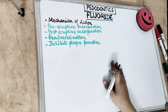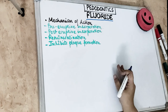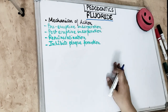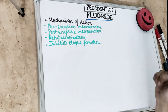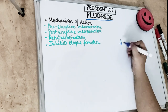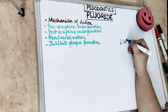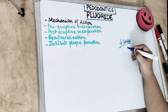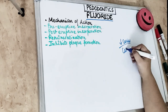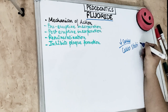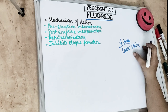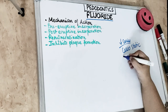Before we get started, make sure you subscribe to this channel and click on the bell icon to get notifications. Now, as we all know, fluoride decreases the prevalence of caries, and this effect is known as the cariostatic effect — 'static' meaning to stop the caries.